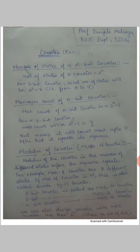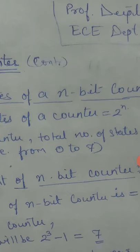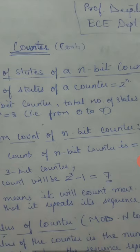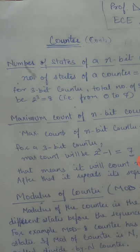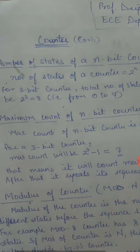First, number of states of a counter. For an n-bit counter, the total number of states will be 2 to the power n. For example, if we have a 3-bit counter — it may be an up-counter or down-counter — the total number of states will be 2 to the power 3, that is 8. It means it will count from 0 to 7, and including 0, there will be a total of 8 states.